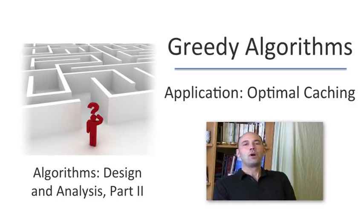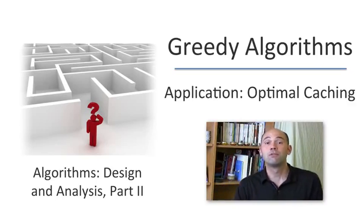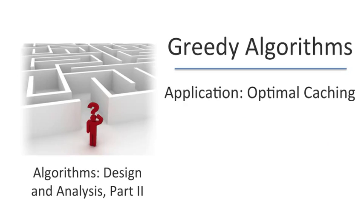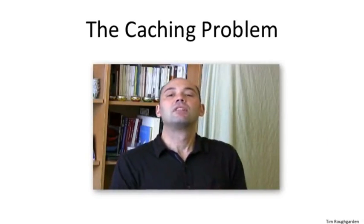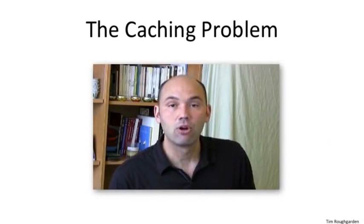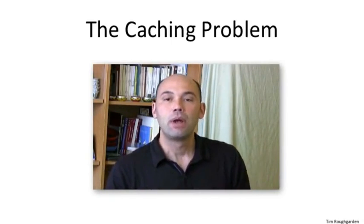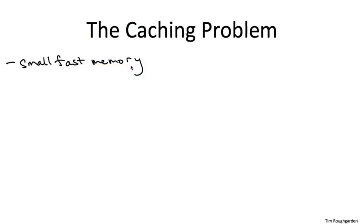So what are greedy algorithms good for? Well, it turns out they're well suited for a number of fundamental problems across different domains of computer science. And to whet your appetite for the many examples that we're going to see, I want to begin by discussing the problem of optimal caching. The punchline of the lecture is going to be that a natural greedy algorithm, in fact, minimizes the number of cache misses over all possible ways of managing a small, fast cache.